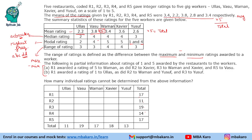R1 awarded a rating of 5 to Vaman, as did R2 to Xavier. So R2 gives 5 to Xavier; R3 gives 5 to Vaman and Xavier also; R5 gives a rating of 5 to Vasu. Then R1 awarded a rating of 1 to Ullas, as did R2 to Vaman and Yusuf; R3 gives Yusuf a rating of 1.